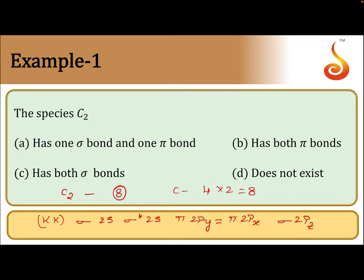So, total 8 electrons I should fill: 2, 2, 2, 2 and 2. This is the molecular orbital order.